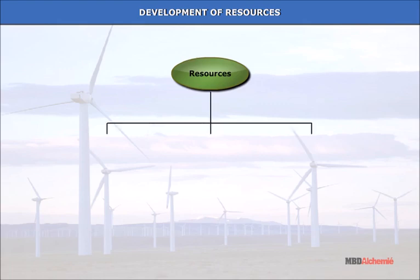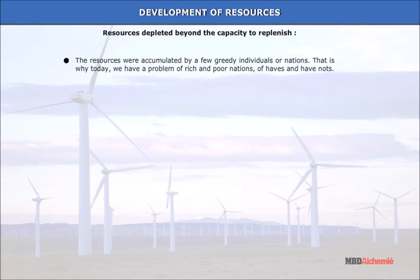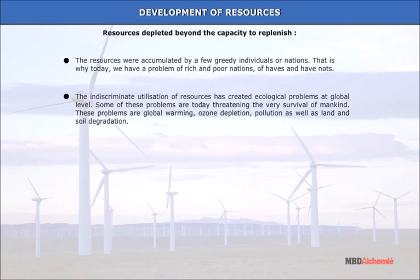Human beings use resources indiscriminately because they consider them to be mere gifts of nature. Resources were accumulated by a few greedy individuals or nations, which is why today we have a problem of rich and poor nations. The indiscriminate utilization of resources has created ecological problems at global level, some threatening the very survival of mankind — including global warming, ozone depletion, pollution, and land and soil degradation.